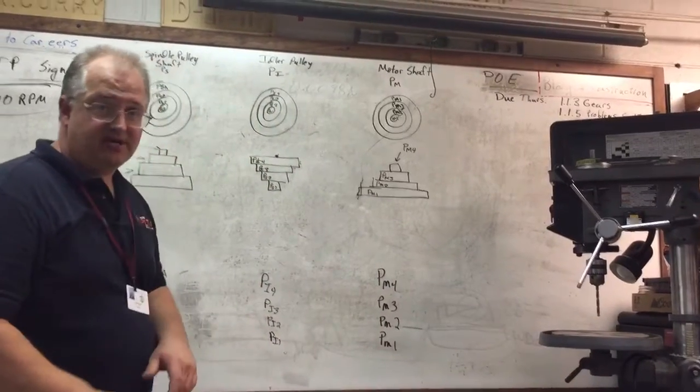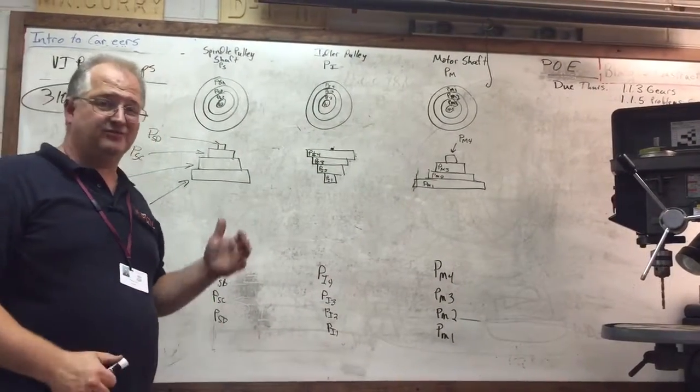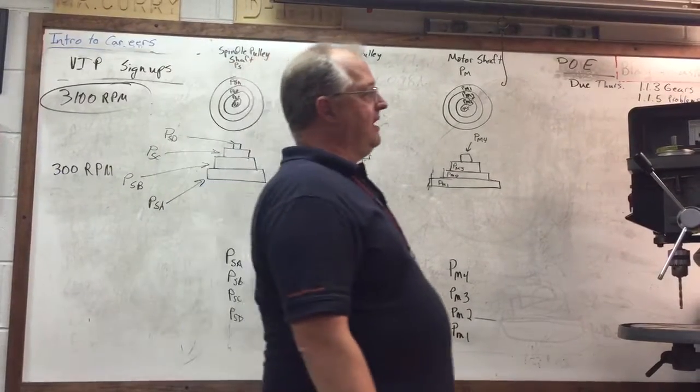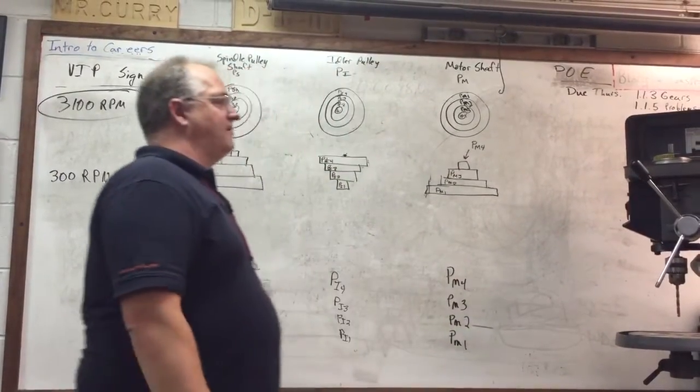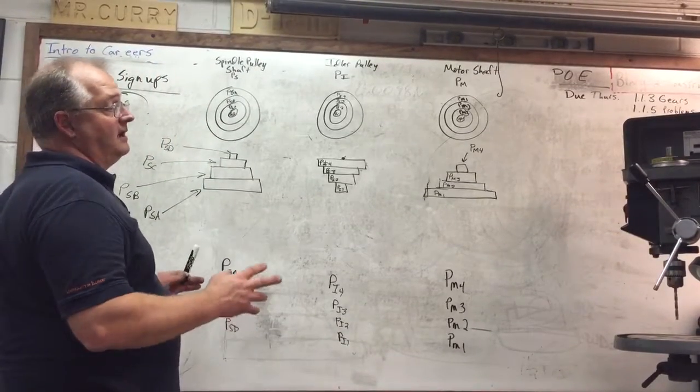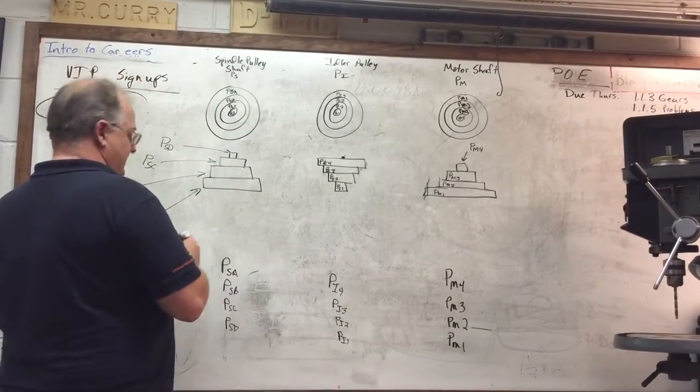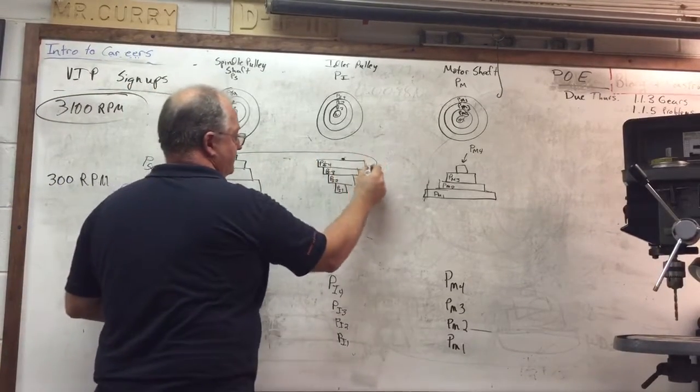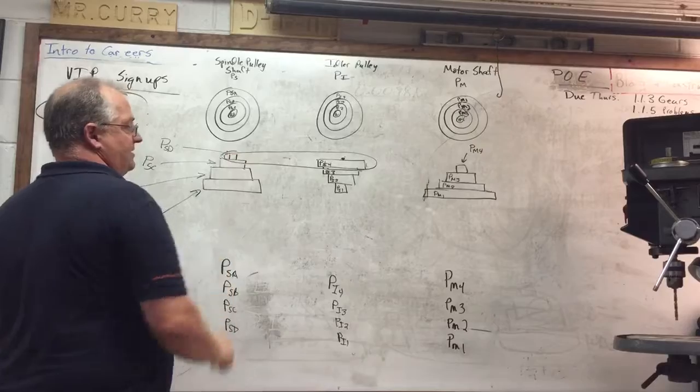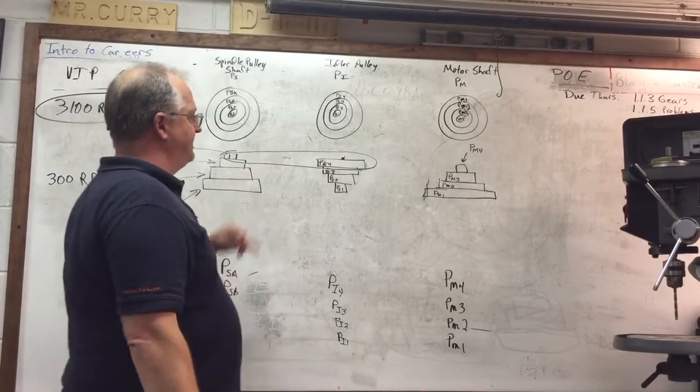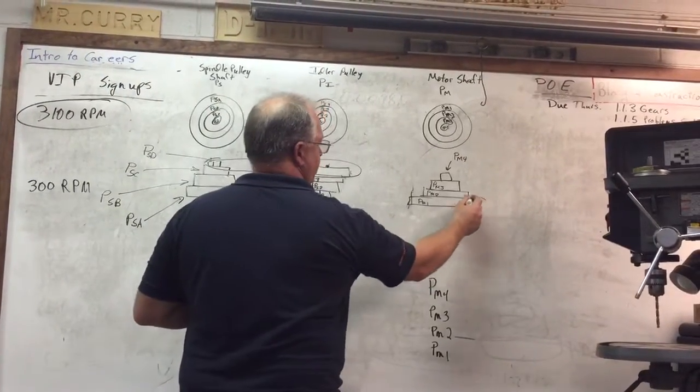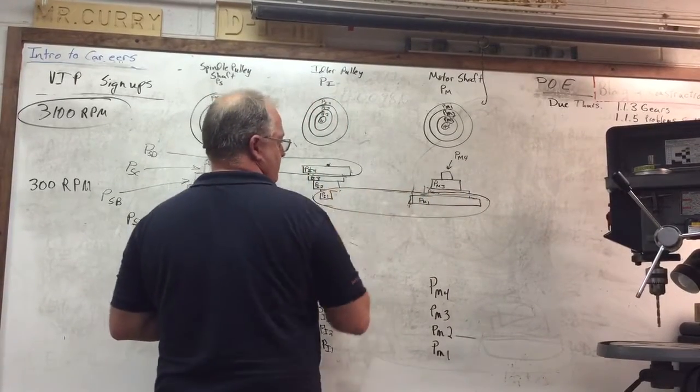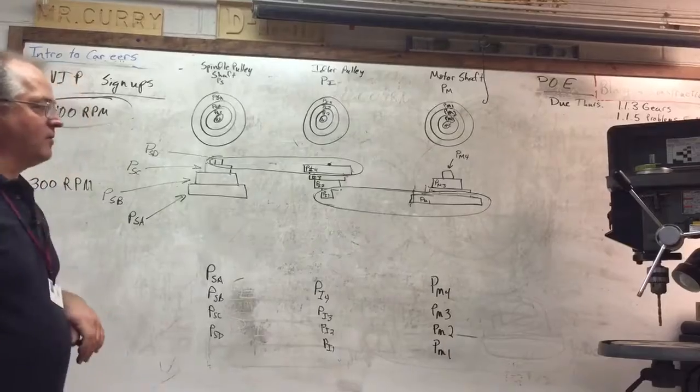So the first thing we're doing is assigning variables to each pulley. And then we know at 3,100 RPM, our belts basically go this way. I'm just going to represent those. We got the belts over here, and then the smaller belt goes between these two pulleys there.